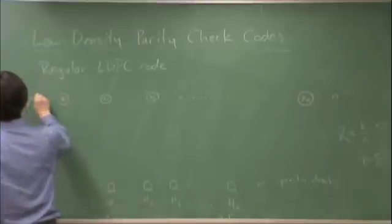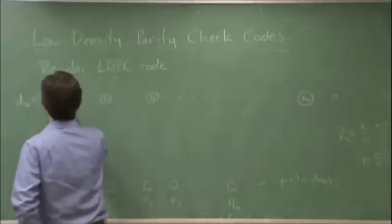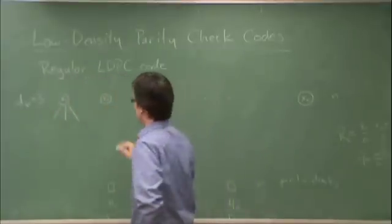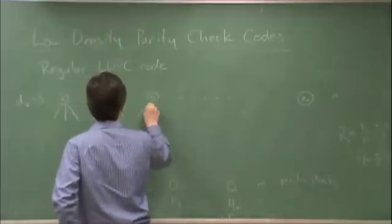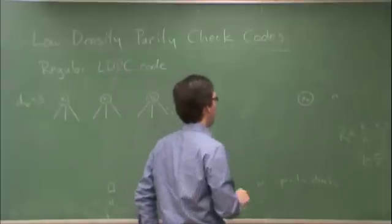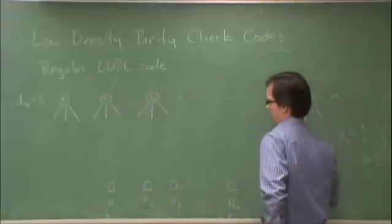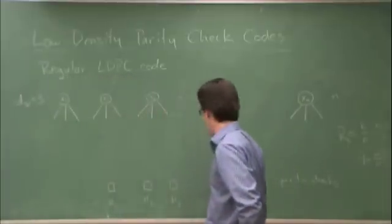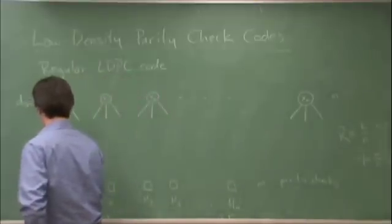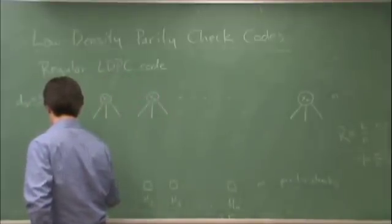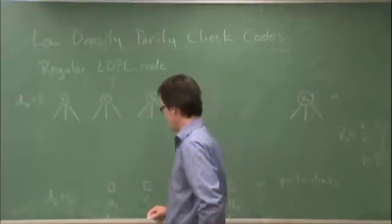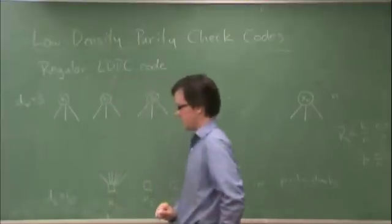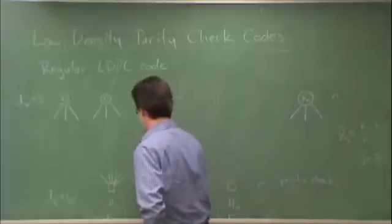For instance, let's say DV is equal to 3. We're going to draw half edges and let those dangle. Down on the bottom, each check has a constant degree of DC. In this example, let's say it's 6. We're just going to draw half edges and let the ends dangle.